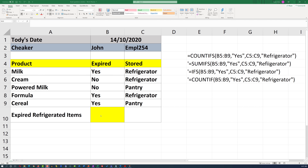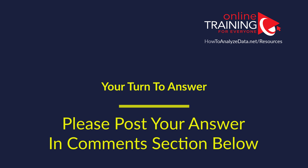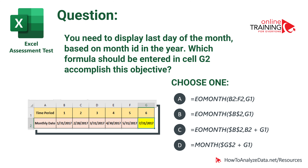This was a tough question — hopefully you got it right. Now it's your turn. Please post your answer in the comment section below. Here is the question: you need to display the last day of the month based on the month's ID in the year. Which formula should be entered in cell G2 to accomplish this objective? One of the choices uses EOMONTH with the range B2 through F2 and G1. Which one do you think is the right answer? Post your answer in the comments so I can give you a grade.